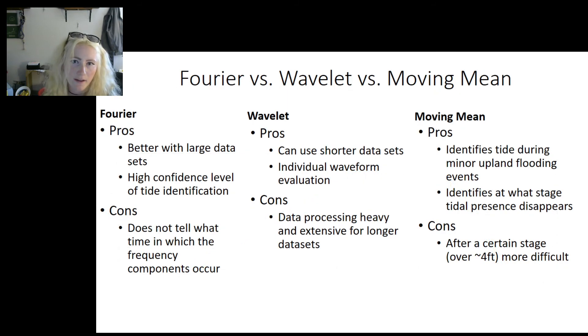All three analyses have their ups and downs. Fourier analysis is better with large datasets while wavelet analysis is able to use short datasets. Large datasets are heavy and extensive for wavelet analysis, however. A con of Fourier analysis is that it does not tell what time in which the frequency components occur. However, that is not as much of a big deal because we do not need to know exactly what time they occur for tidal presence.